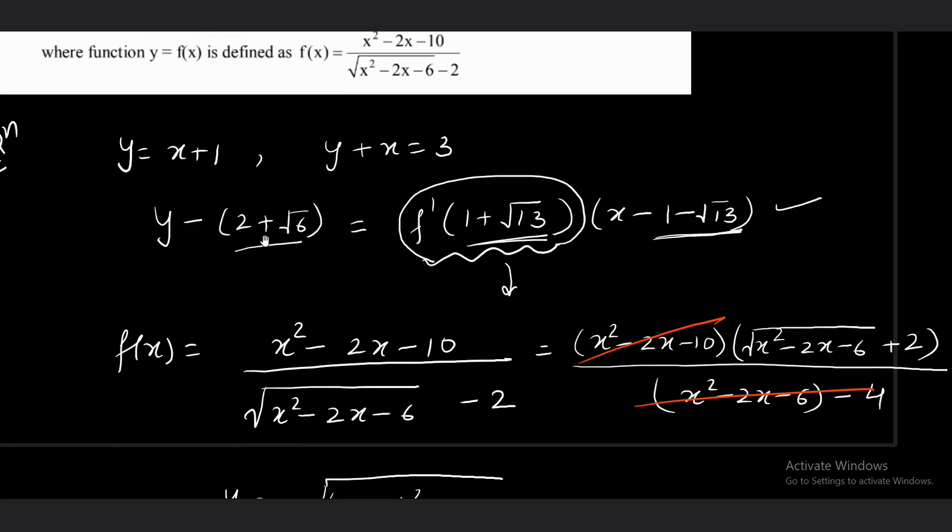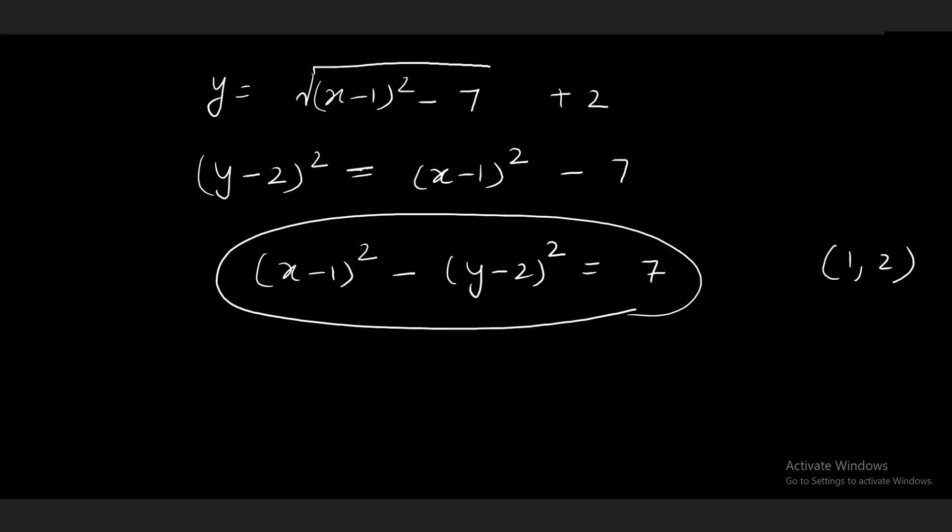Or are we getting this point lying on the curve? So let us write x equals 1 plus root 13. When you write x equals 1 plus root 13, then 13 minus 7 will become 6, which means root 6. So, y equals 2 plus minus root 6.